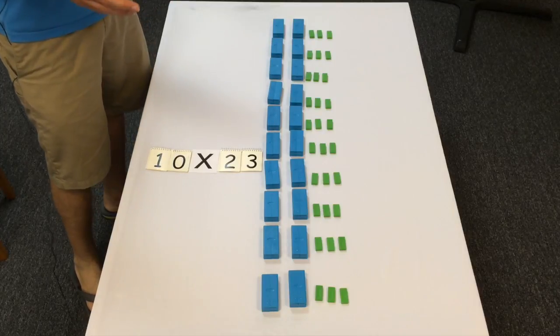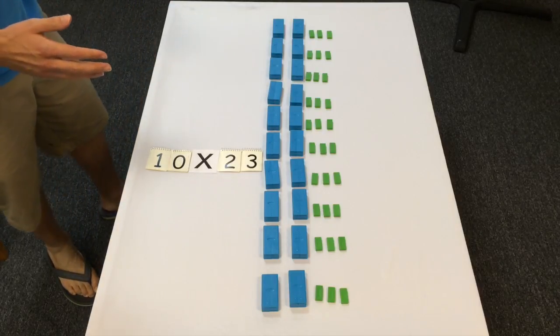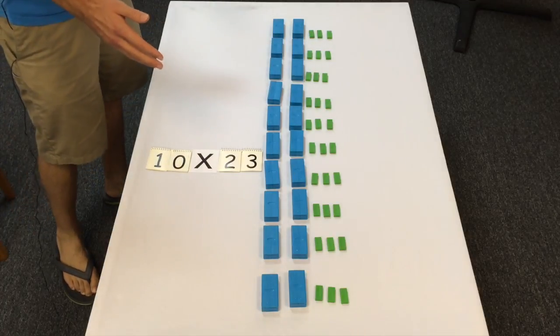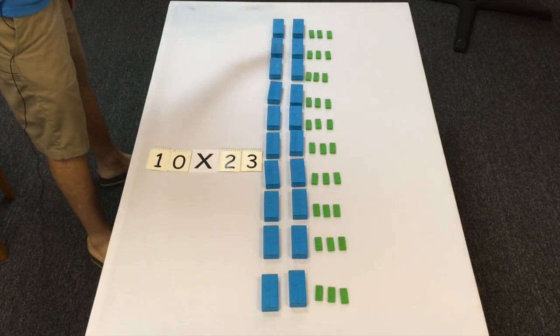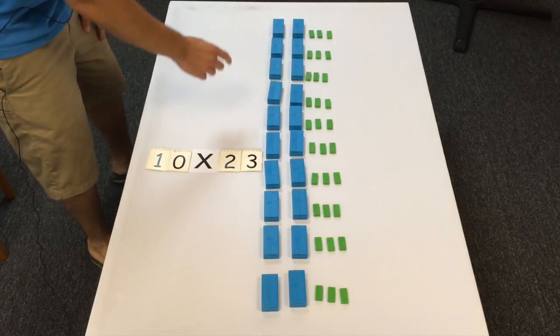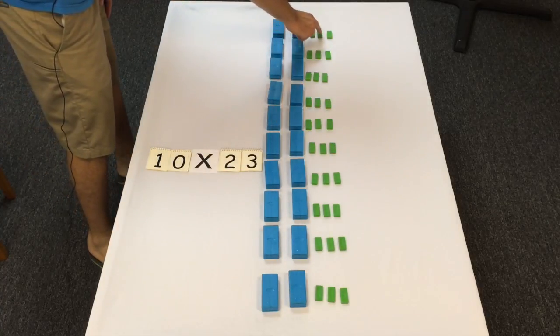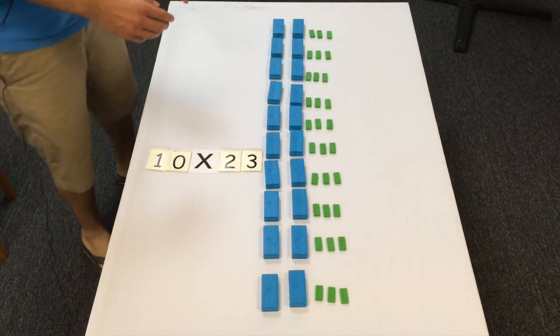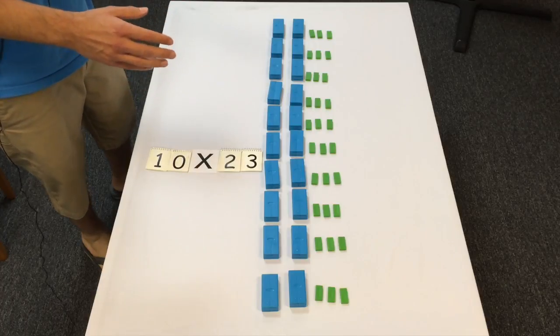So I've set up 10 times 23. We have 10 groups of 23, so each group has 23. And I'm going to show you how we can pack it in such a way that it'll show why you can shift to the left, why you end up adding a zero.